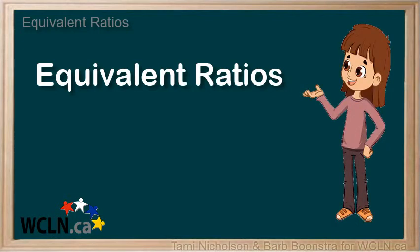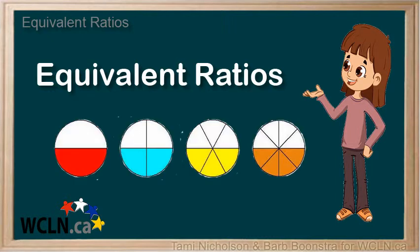Equivalent ratios are two ratios that express the same relationship between the terms. It is easy to see that 1 to 2 is the same ratio as 2 to 4, 3 to 6, and 4 to 8.